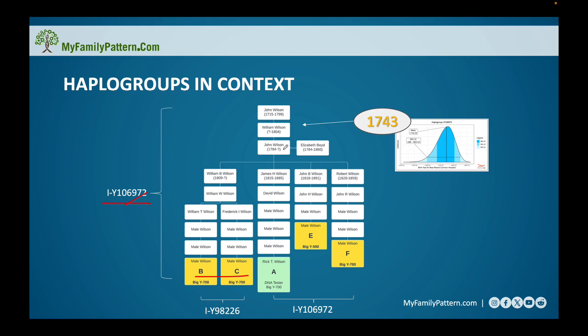Well, the reality is John may not have been the first person in my line to have the mutation which created this haplogroup. It very well could have come from his father, William Wilson, or his grandfather, John Wilson.